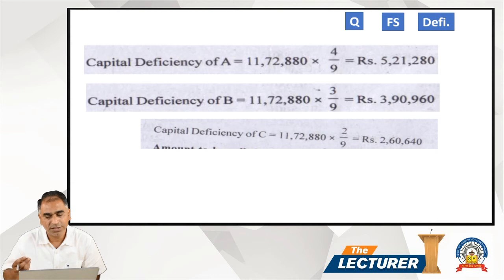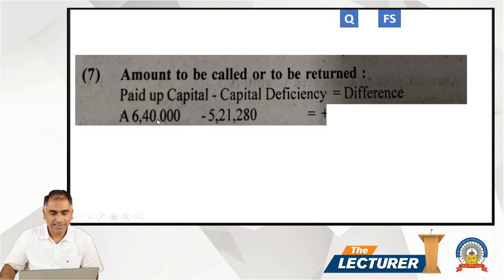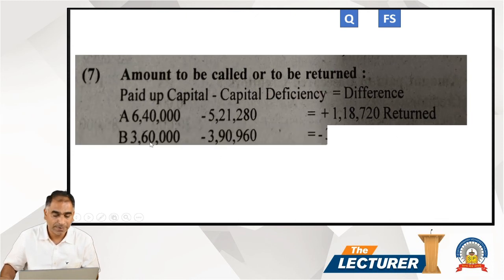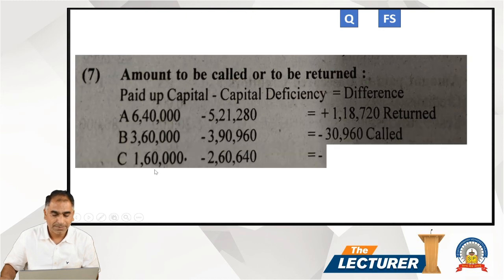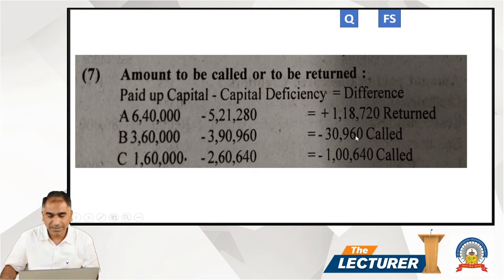Total amount repayable to each shareholder category is paid-up capital minus deficiency share. For A: paid-up capital ₹6,40,000 minus deficiency ₹5,20,000 = refund of ₹1,18,000. For B: paid-up ₹3,60,000 minus deficiency ₹3,90,000 — deficiency exceeds paid-up, so a call of ₹30,000 must be made. For C: paid-up ₹1,60,000 minus deficiency ₹2,60,000 — again deficiency exceeds paid-up, so a call of ₹1,00,000 is made. A receives a refund; B and C are called upon. Calls from B and C appear as receipts; refund to A appears as a payment.